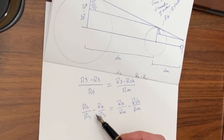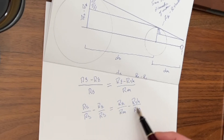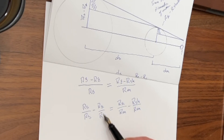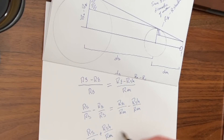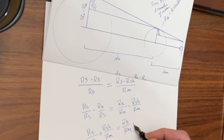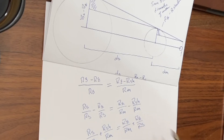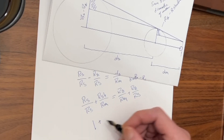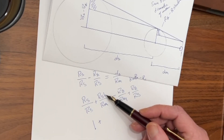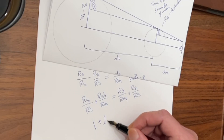Now we're going to get rid of these minus signs. We're going to make them pluses by adding each term to both sides, and what we end up with is: radius of the Sun over radius of the Sun, plus radius of the shadow of the Earth over radius of the Moon, equals radius of the Earth over radius of the Moon, plus radius of the Earth over radius of the Sun. We can solve for some of this already. The radius of the Sun over the radius of the Sun equals 1, and the radius of the shadow of the Earth over the radius of the Moon is 2.6.